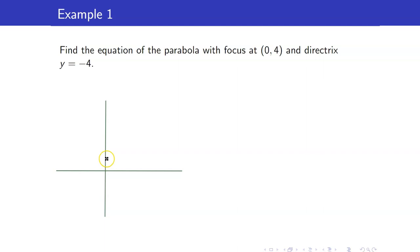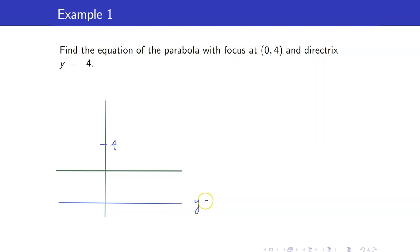Our focus here is at (0, 4). This is our 4, and the directrix is y equals negative 4. Let's say this line is y equals negative 4. The distance between the focus and the directrix here is equal to 8. What is that point exactly in between these two? That would be your vertex, which means that your vertex has to be the origin.